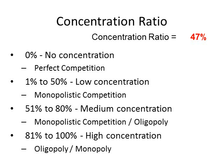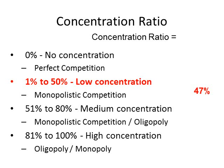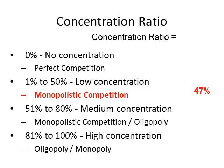The final step is to evaluate the concentration ratio against the criteria. Comparing 47% to 0% shows we are not in a no-concentration situation. Comparing 47% to the 1%–50% range, we can see that 47% falls within this range, indicating a low level of concentration. This implies that the market has the characteristics of monopolistic competition.